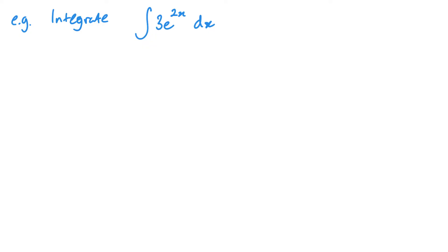Okay, second example. Nice straightforward one. What I like to do here is take this constant out. So I'm actually thinking of integrating then just e to the 2x, just to save a little bit of confusion. I prefer it. It's up to you whether you do. It makes no difference, but it's nice to take that constant out.